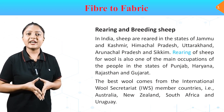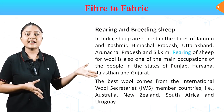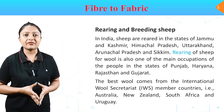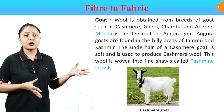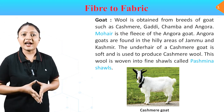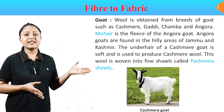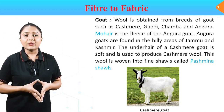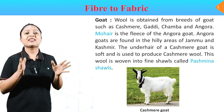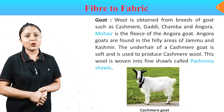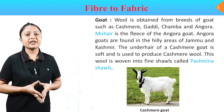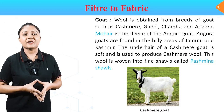The best wool comes from International Wool Secretariat (IWS) member countries: Australia, New Zealand, South Africa and Uruguay. Goat: wool is obtained from breeds of goat such as Kashmiri, Gaddi, Chamba and Angora. Mohair is the fleece of the Angora goat. Angora goats are found in the hilly areas of Jammu and Kashmir. The underhair of a Kashmiri goat is soft and is used to produce Kashmiri wool, which is woven into fine shawls called Pashmina.